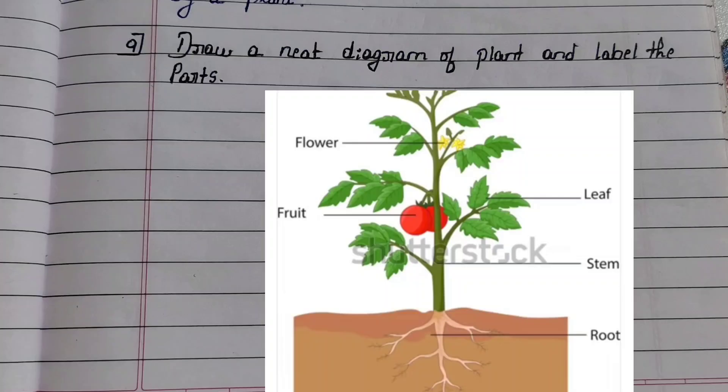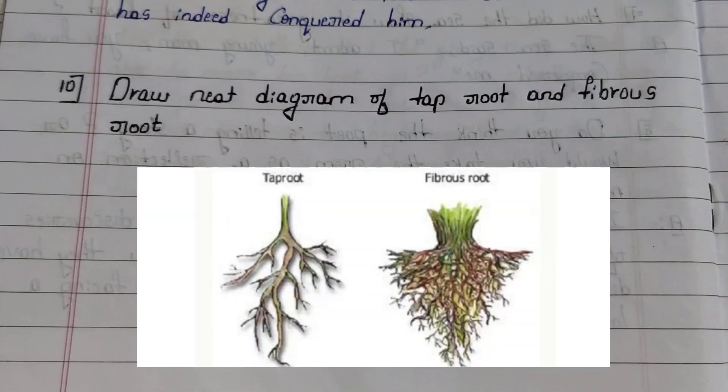Ninth question: draw a neat diagram of a plant and label the parts. Tenth question: draw a neat diagram of taproot and fibrous root.